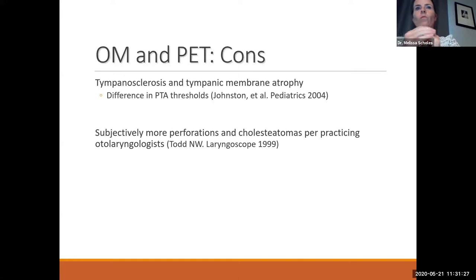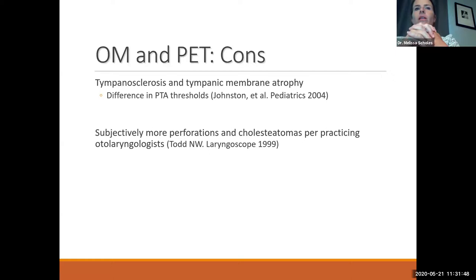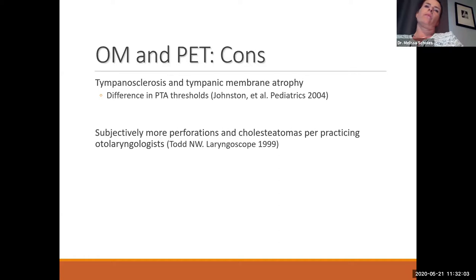There are drawbacks to ear tubes. They can cause changes in the eardrum — tympanosclerosis and tympanic membrane atrophy — though there's debate about whether this is from the infections or the tube itself. A 2004 study found a difference in pure-tone average (PTA) thresholds between kids who had tubes and those who didn't. Most of us put tubes in for the right reasons, but we don't want to do it unnecessarily. There are also subjectively more perforations and cholesteatomas after ear tube placement.